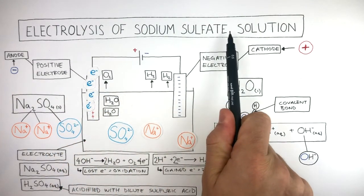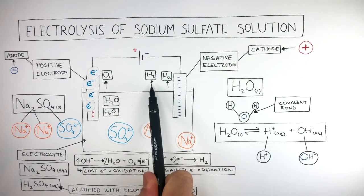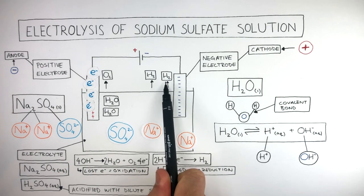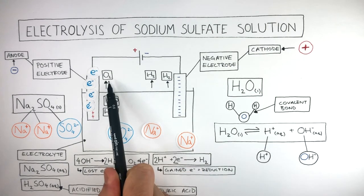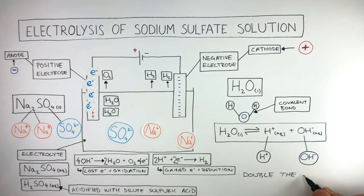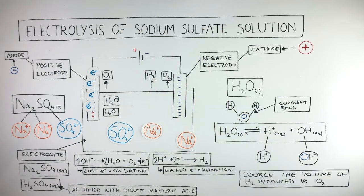In the electrolysis of sodium sulfate solution, for every two hydrogen molecules produced, there is one oxygen molecule produced. This means double the volume of hydrogen is produced compared to oxygen, and what's left in the solution is the sodium sulfate. So in the electrolysis of sodium sulfate solution, the aim is to produce hydrogen and oxygen gas.